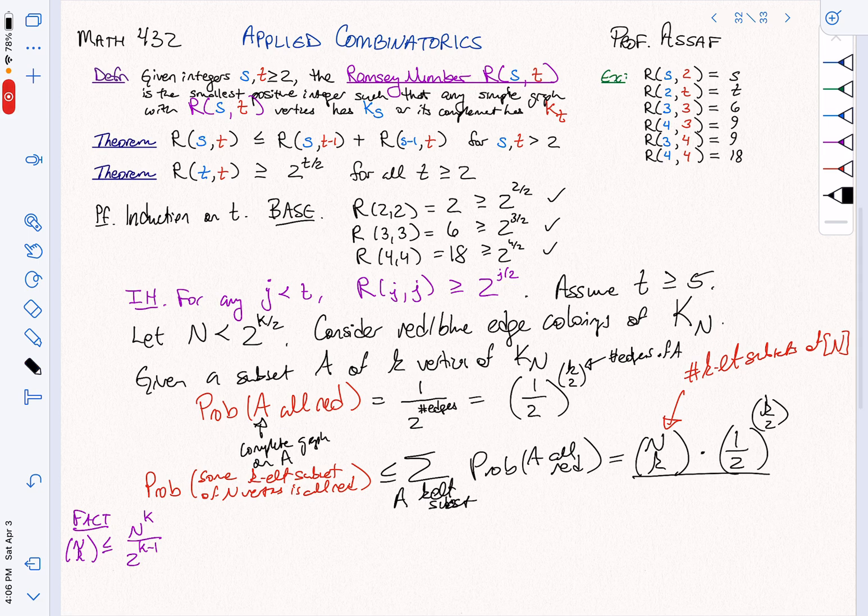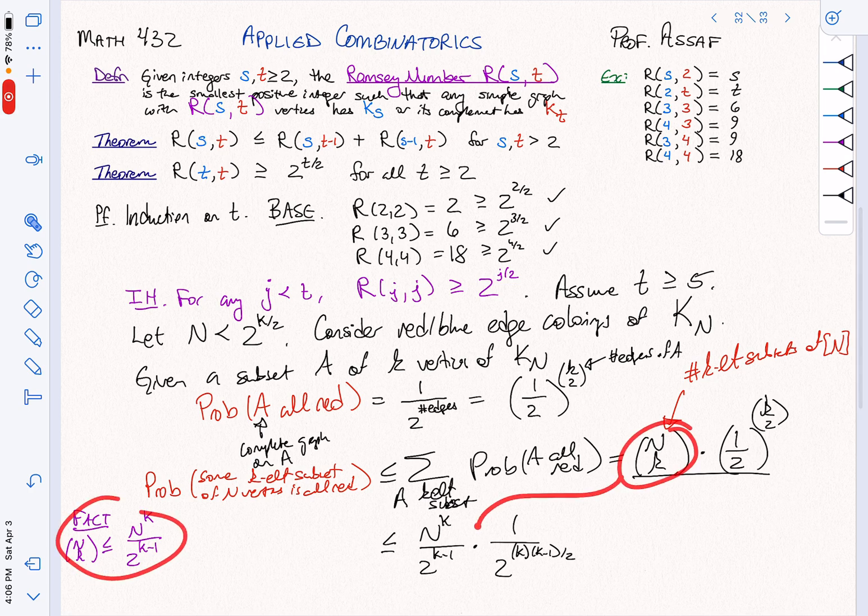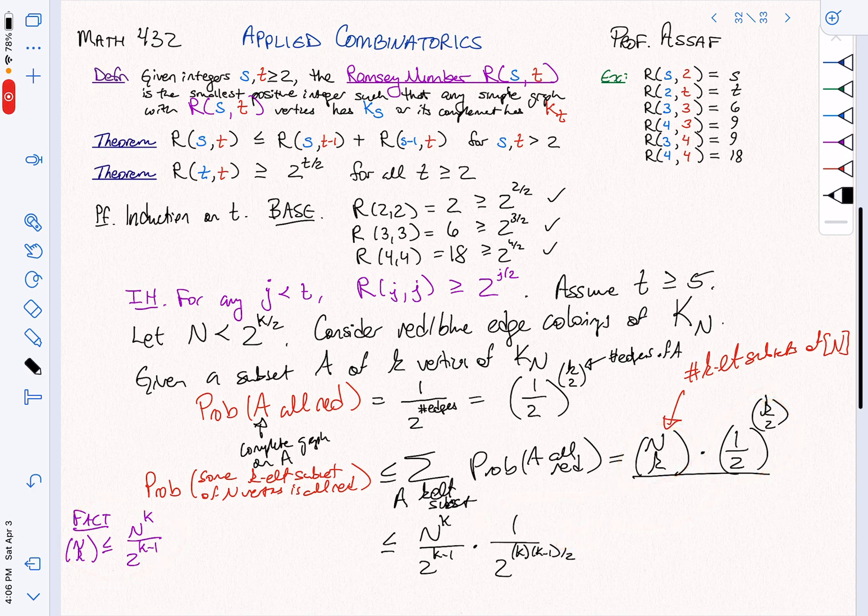Using this fact, this lets us prove that this part here we now know is less than or equal to, just using this fact, N to the K divided by 2 to the K minus 1 times 1 over 2 to K times K minus 1 over 2. All I've done here is I've used this bound for this term, and then I've written this in a different way and just expanded out what K choose 2 is.